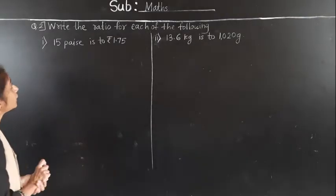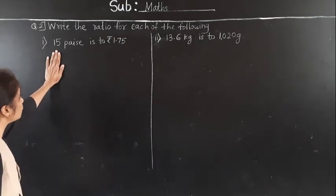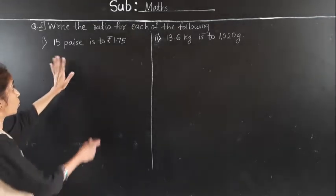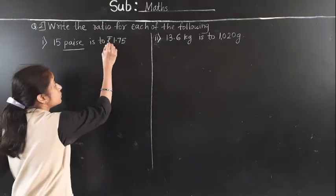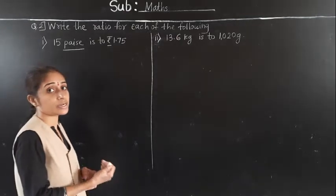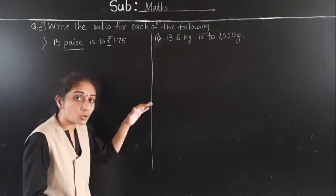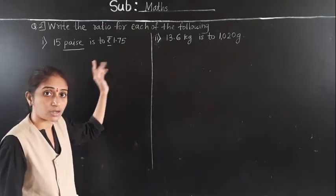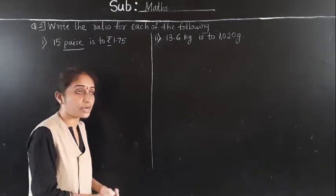Let's solve question number 2. Write the ratio for each of the following. First word problem: 15 paise is to 1 rupee 75 paise. Here the first value is given in paise and the second in rupees, so the units are different. Let's make the units the same by converting rupees into paise.